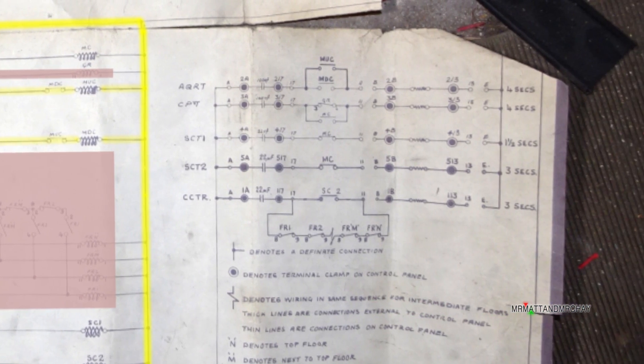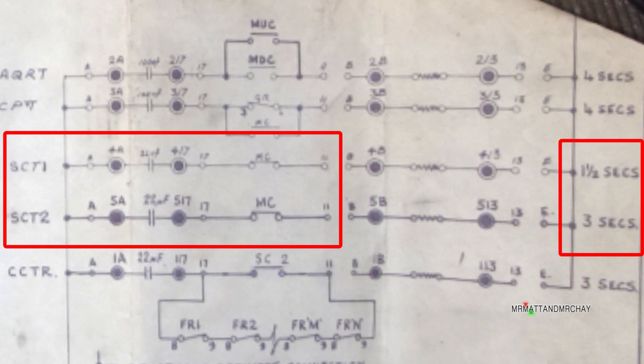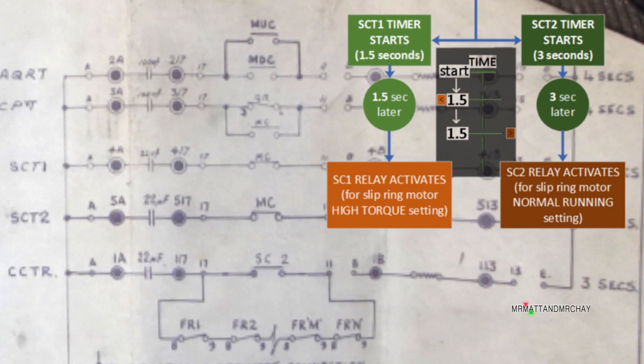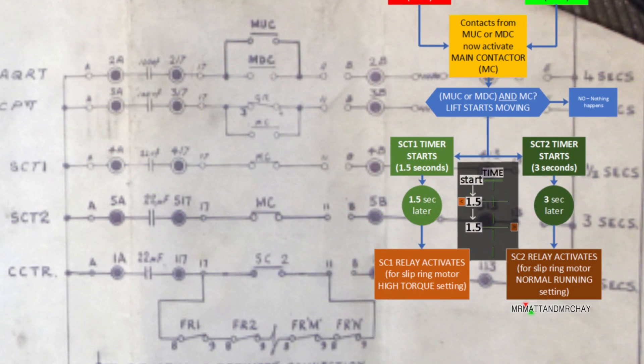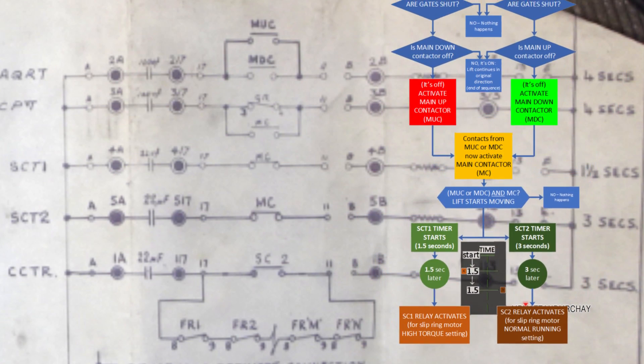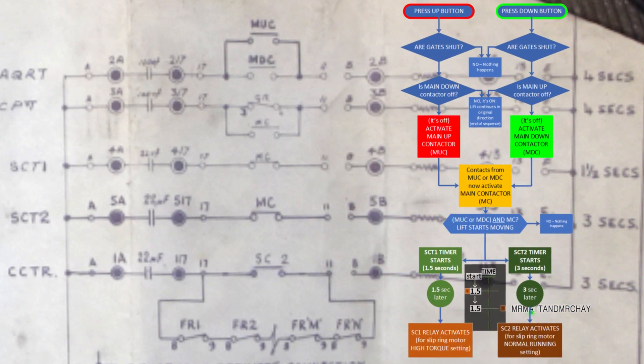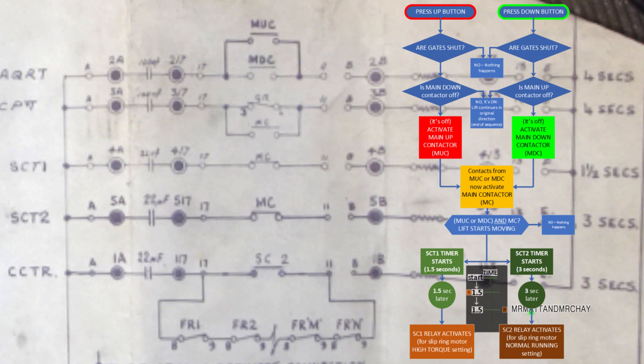Moving to the right, these are a collection of timer circuits, but it's these that I want to focus on. When the main contact is activated, two timers are activated together. These are SCT1 and SCT2. SCT1 delays the first slip ring motor relay for 1.5 seconds. After a further 1.5 seconds, timer SCT2 activates relay SC2. Relays SC1 and SC2 control the slip ring motor, which is coming up in a moment.